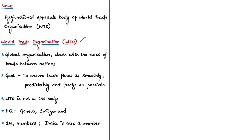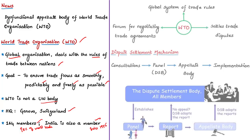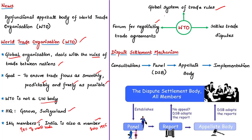The World Trade Organization or WTO is the global international organization that deals with the rules of trade between nations. Its goal is to ensure that trade flows as smoothly, as predictably, and as freely as possible. Note that this is not a UN body. The headquarters of WTO is located at Geneva, Switzerland. WTO has 164 member countries representing about 98% of the world trade. India is also a member of WTO from 1995. WTO has many roles: it operates a global system of trade rules, acts as a forum for negotiating trade agreements, settles trade disputes between its members, and supports the needs of developing countries.